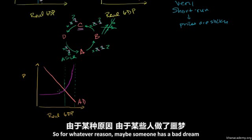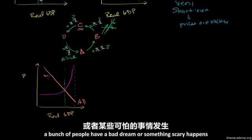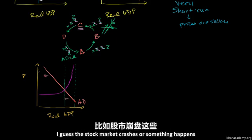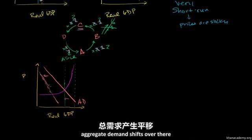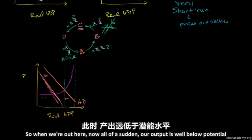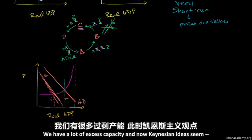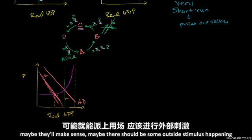So for whatever reason — maybe someone has a bad dream, or something scary happens like a stock market crash — aggregate demand shifts way over to the left. Now all of a sudden our output is well below potential. We have a lot of excess capacity, and now Keynesian ideas seem to make sense — maybe there should be some outside stimulus happening.